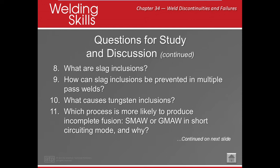Which process is more likely to produce incomplete fusion? If you look at some of the radiographs, a lot of them show incomplete fusion with GMAW short circuit, because the short circuit mode is usually really low — less than 200 amps — so it has low penetration into your base metal.